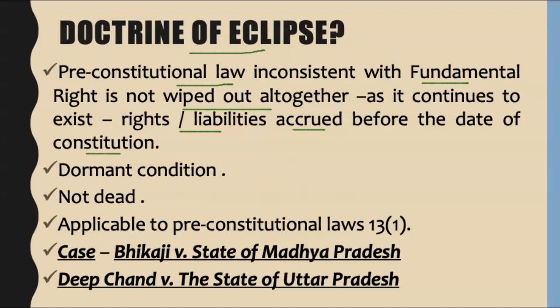This doctrine talks about pre-constitutional laws. If any such pre-constitutional law becomes inconsistent with fundamental rights after the commencement of the constitution, that law will be in a dormant condition — it will not be dead. The law would be regarded as having been eclipsed for the time being by the relevant fundamental right. And if we amend that particular fundamental right with which our law is inconsistent — removing the shadow — then the act again becomes valid and operative.